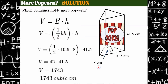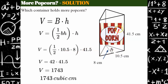Now let's find the volume of this triangular prism popcorn box. It has a triangular base and we'll multiply by the height. The triangular face has a base of 10.5 and the height is 8.